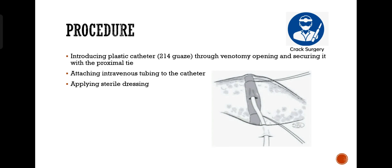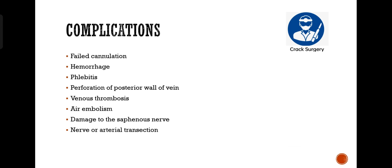Introduce a plastic catheter of 14-gauge through the venotomy opening and secure it with the proximal tie. Attach intravenous tubing to the catheter and apply a sterile dressing.